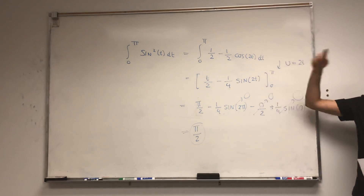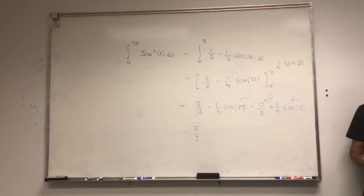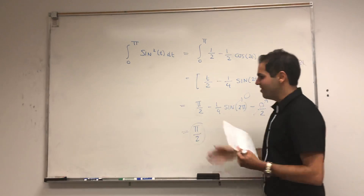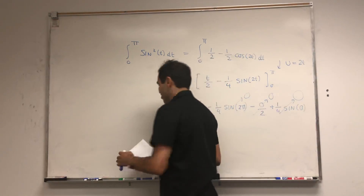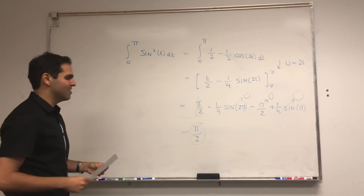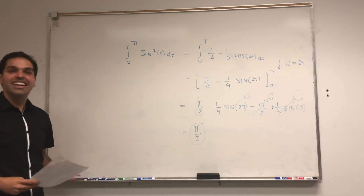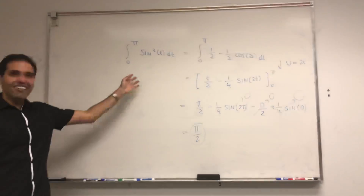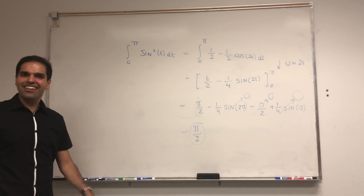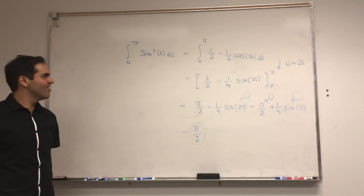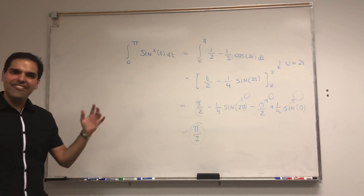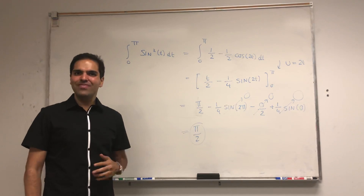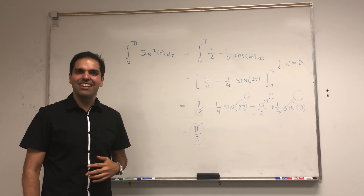By the way, this exact same approach also works for cosine squared. You can do the same thing, but solve for cosine squared in terms of sine squared in your double angle formula. I hope you liked this little calculus integral extravaganza — if you want to see more calculus and math, please make sure to subscribe to my channel.